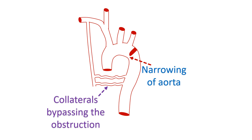Coarctation of aorta can cause development of collateral blood flow to the lower part of the body through circuitous routes. This causes enlargement of the blood vessels over the back of the chest, which may be felt as pulsations in the back. When a large number of collaterals are present, the volume of pulse in the lower limb may improve, though they are still delayed because of the circuitous route of blood flow.